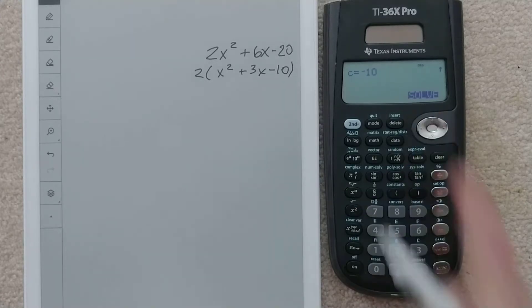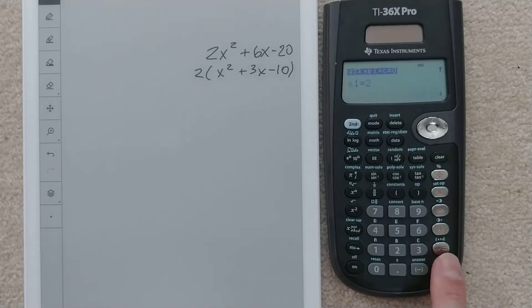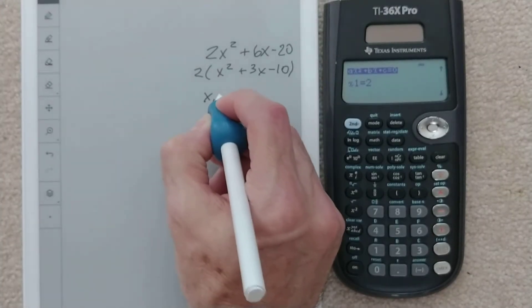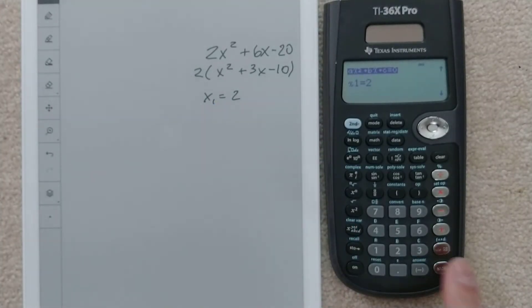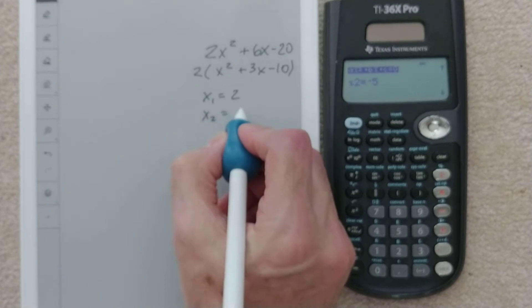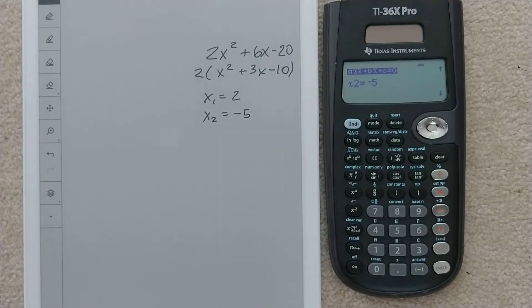Enter. And then I'm going to hit enter again, because now solve is highlighted. It says x₁, x sub 1, is 2. That's our first root. Our second root is x₂, and that is negative 5. These are our roots.